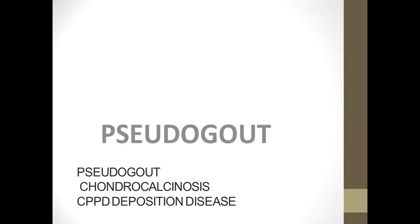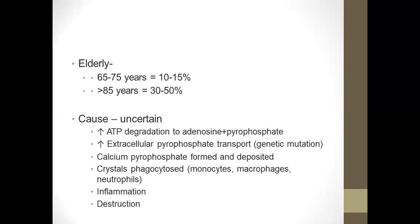In pseudogout, also called chondrocalcinosis—chondro is cartilage, calcinosis is calcification—there is calcification of cartilage. This is from calcium pyrophosphate dihydrate crystal deposition. The cause is uncertain. ATP degrades to adenosine and pyrophosphate. Increased excess pyrophosphate transport can occur with certain genetic mutations. Increased levels of pyrophosphate lead to calcium pyrophosphate dihydrate formation and deposition in different tissues where they are phagocytosed by monocytes, macrophages, and neutrophils, setting up inflammation. When occurring in joints, this leads to inflammation, arthritis, and in long term, severe disease can lead to destruction of the joint.